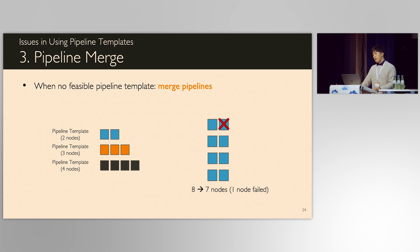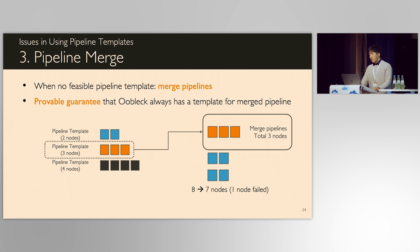As training goes on, there might not be a feasible pipeline template to be instantiated. In this example, there's no pipeline template for just one node. Instead of leaving that one node unused, we merge it with another pipeline. Then we have three nodes, so that pipeline template for three nodes can be instantiated. In this example, Ooblack provably guarantees that there's always a feasible pipeline template when you merge pipelines.